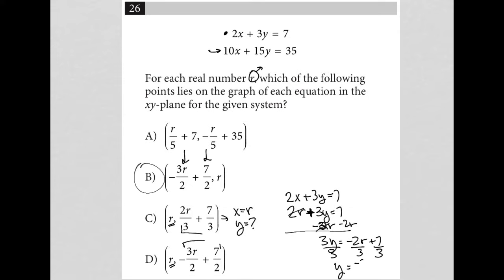I divide everything by 3 in order to isolate my y. And I have y equals negative 2r over 3 plus 7 over 3. And is that what choice C says? No. It's close.